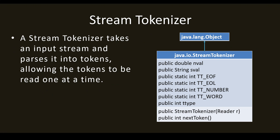There are some fields and methods used in stream tokenizer. A stream tokenizer takes an input stream and parses it into tokens, allowing the tokens to be read one at a time. The fields used are: nval (numeric value), sval (string value), and the integer TT_EOF, which is used to check whether the program is at the end of the file. It returns an integer value, most probably minus 1, as you keep counting tokens starting from 0.